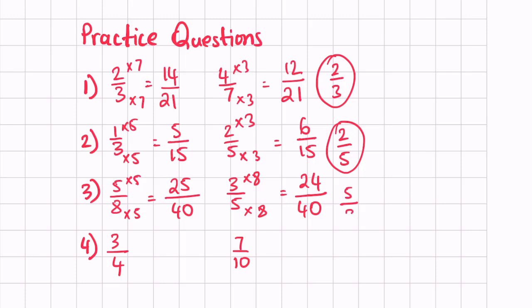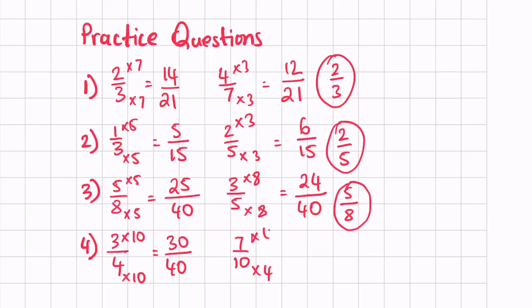Always remember to write down the actual fraction as your answer, otherwise you might get marked down. For this last one we have denominators of 4 and 10. We multiply by 10, giving us 30 over 40, and the other by 4, giving us 28 over 40. We can see 30 over 40 is larger, so therefore our answer is three quarters is the larger fraction.